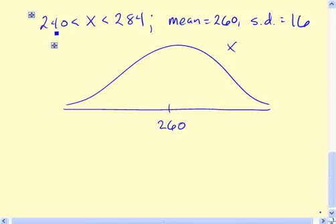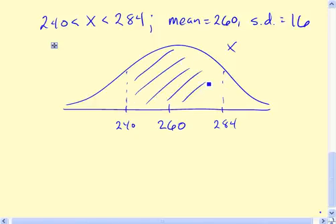So now the percentage of pregnancies between 240 and 284 days is going to correspond to the area below the graph between 240, maybe about right there, and 284, roughly right there. Again, you don't have to get these things perfect, you just have to get their relative positions correct. So what we need to know is this area right here.